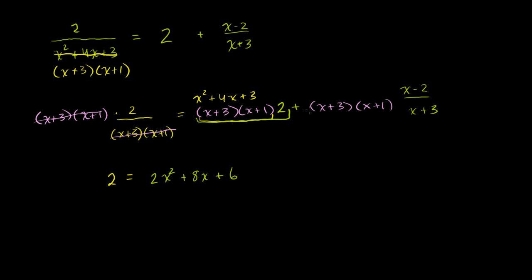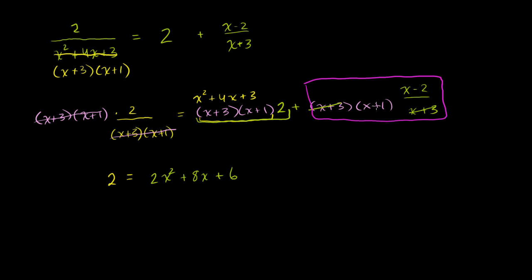And now this term — we have an x plus 3 in the denominator of x minus 2 over x plus 3. That x plus 3 will cancel with the x plus 3 we multiplied by, so we're just left with x plus 1 times x minus 2. Let's expand that: x times x is x squared, x times negative 2 is negative 2x, 1 times x is plus x, and 1 times negative 2 is minus 2.